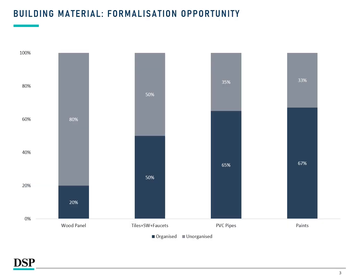Let us now look at the individual segment formalization opportunity. Wood Panel is least organized at about 20%, followed by Tile Sanitary Ware Faucets at about 50-67%. In both Wood Panel and Tile segments, where there is a large proportion of unorganized players, there are triggers driving automatic formalization towards branded players. In the Wood Panel category, the incremental usage of MDF is seeing very fast increase, and MDF is a very capital-intensive process, which is why organized players are naturally gaining market share.